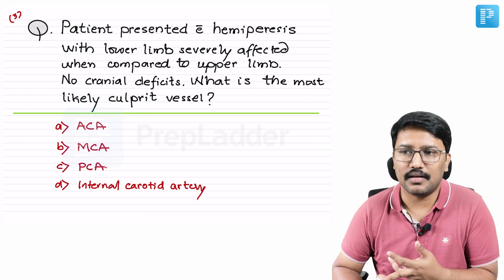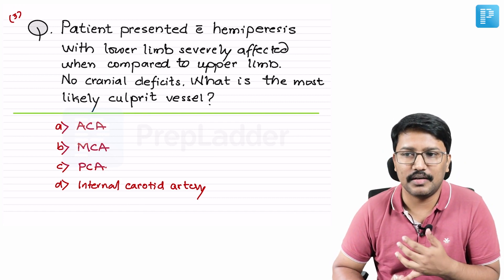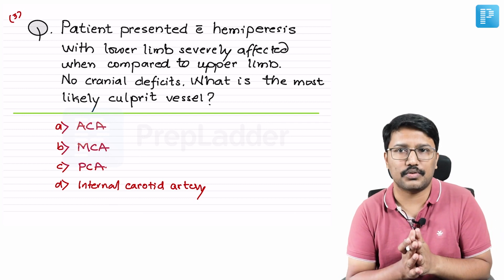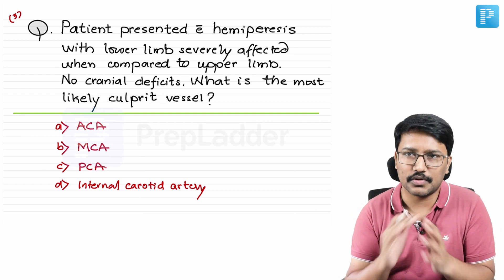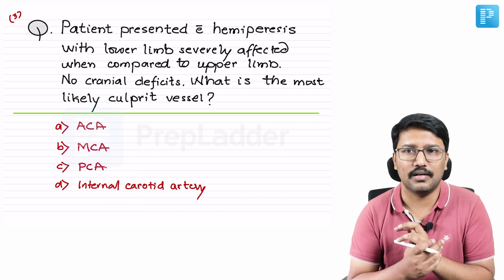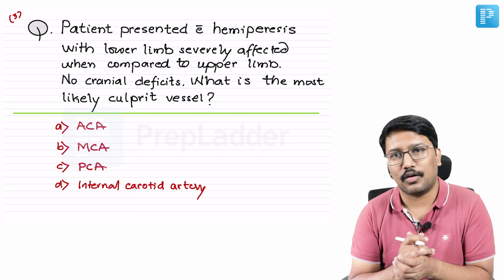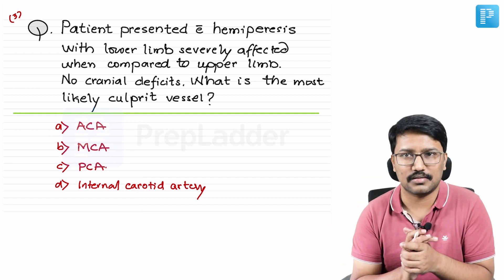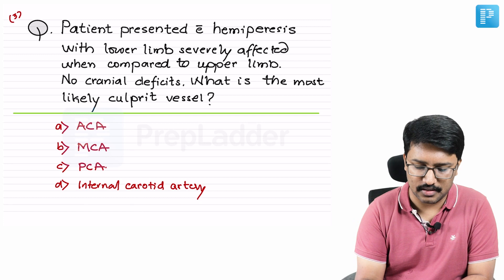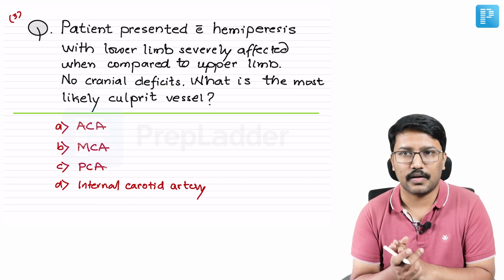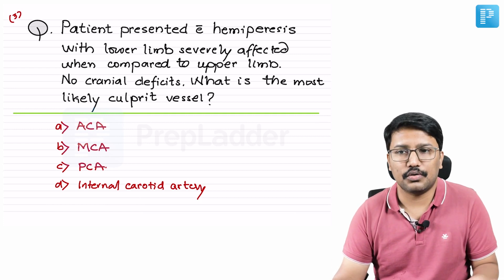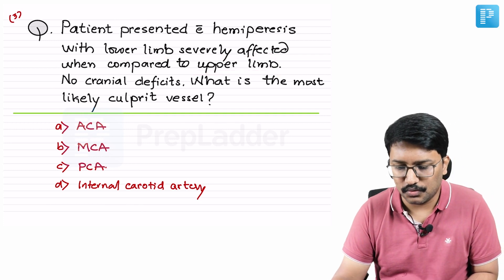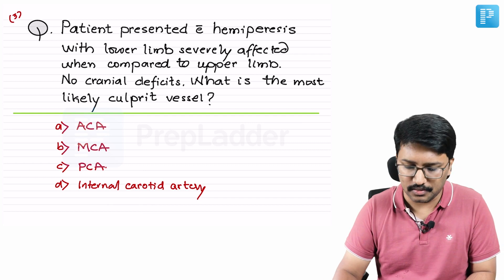Next question: patient presented with hemiparesis with lower limb severely affected compared to upper limb, no cranial nerve deficits. First, localize: no horizontal sensory level, no paraparesis — so it's hemiparesis. Not a brainstem lesion because there are no cranial nerve deficits, no crossed hemiparesis. So it is either subcortical or cortical. Lower limb is much more severely affected than upper limb.